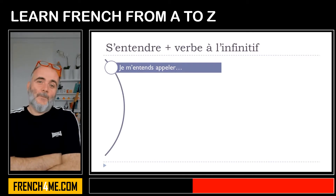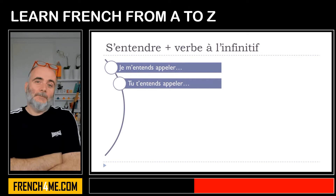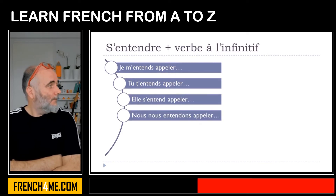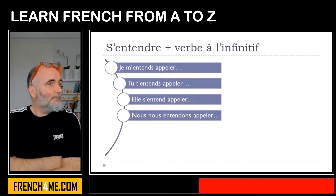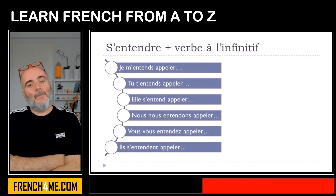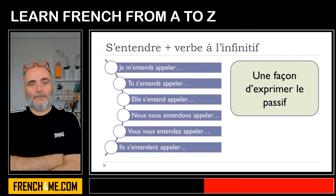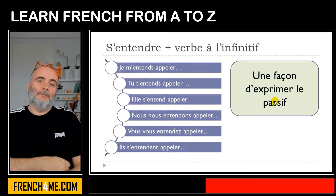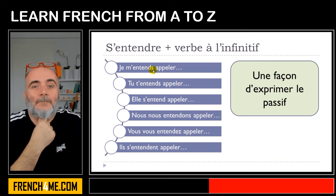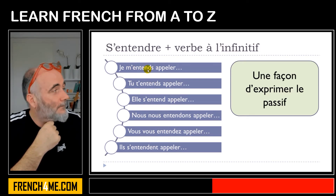Je m'entends appeler, tu t'entends appeler, elle s'entend appeler, nous nous entendons appeler, vous vous entendez appeler, ils s'entendent appeler. Remember, it's a way to express the passive form. You only need to remember the conjugation of entendre at the present form.